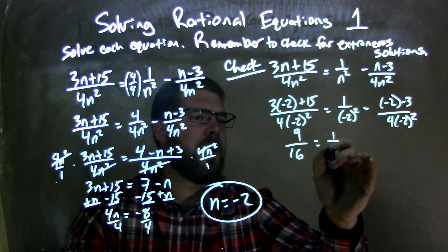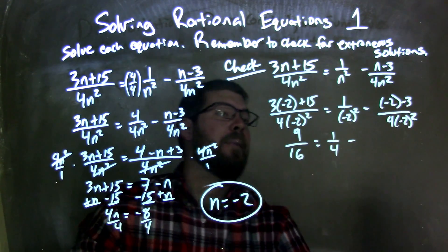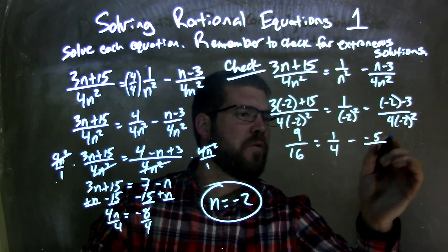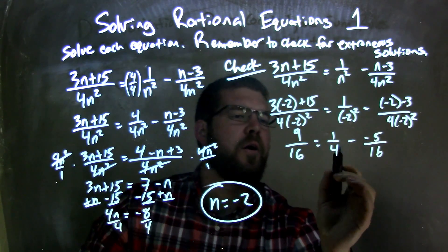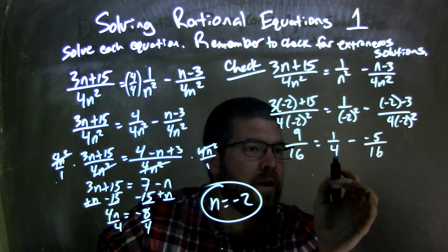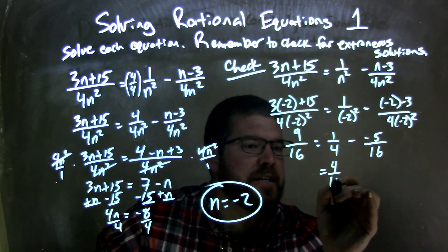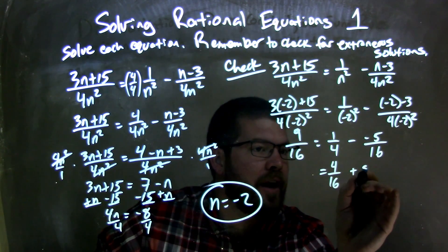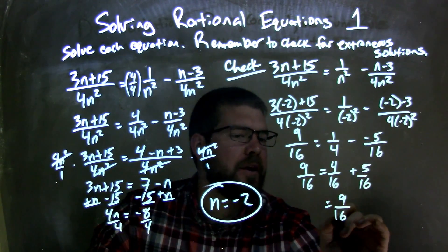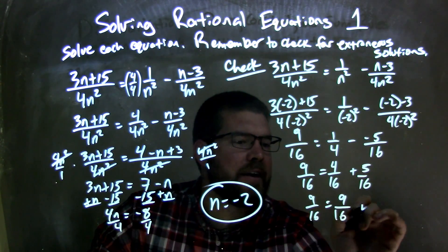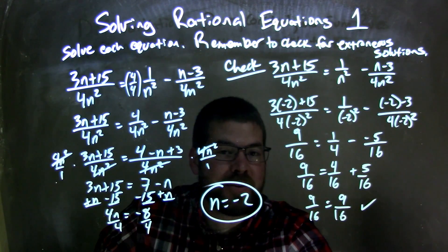On the right: 1 over positive 4, and negative 2 minus 3 is negative 5, so negative 5 over 16. Negative 2 squared is positive 4, and 4 times 4 is 16. I can rewrite 1 fourth — I want to have the same base as 16 — so 4 over 16. Then minus the negative gives a positive 5 over 16, and we have 9 over 16 on the left. 4 plus 5 is 9, so we have 9 over 16. Left and right hand side are equal, which confirms our final answer, which is n equals negative 2.